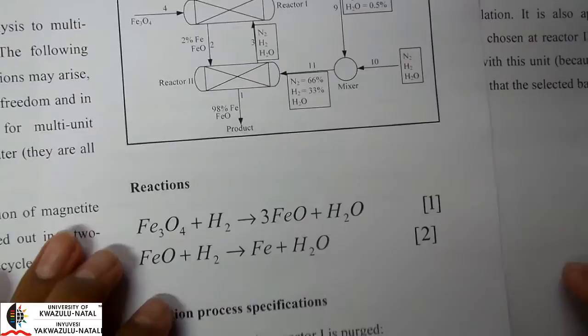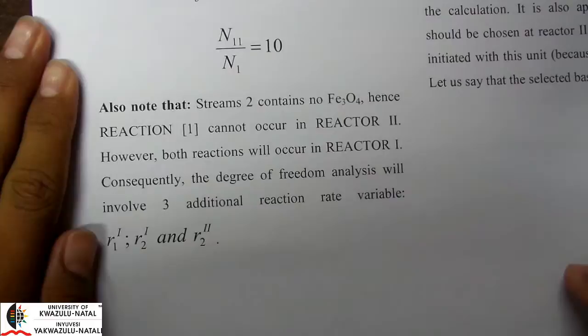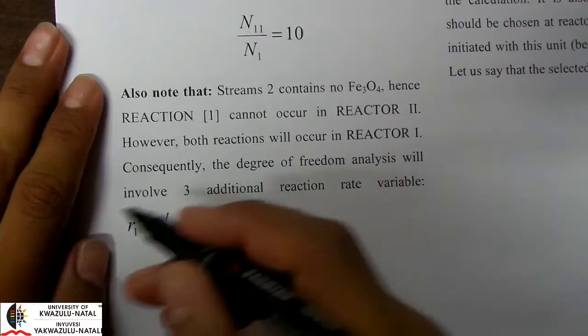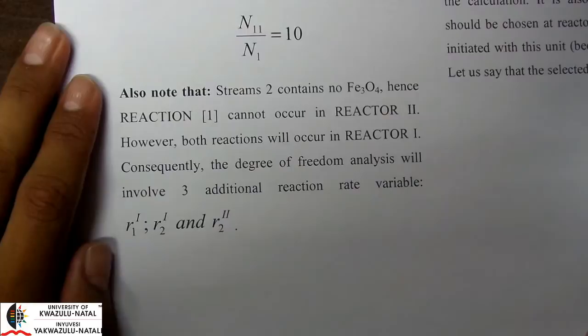Since there is no Fe₃O₄ entering reactor 2, only the second reaction will occur in reactor 2. However, both reactions will occur in reactor 1. Our degree of freedom analysis must account for this: in reactor 1 we will have two reactions expressed as r1 and r2, and we will have one rate of reaction for the second reaction in reactor 2.